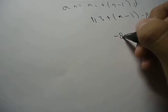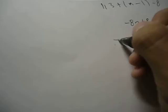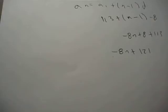And then we distribute the negative 8, so negative 8n plus 8 plus 113. This gives us negative 8n plus 121. And that's our formula.